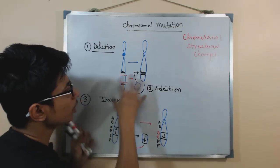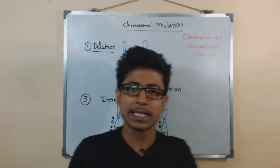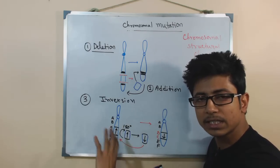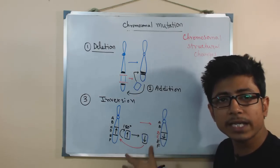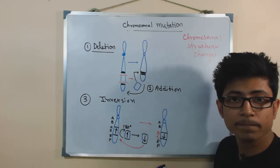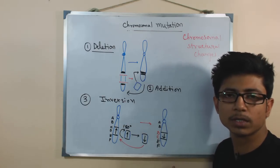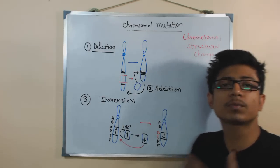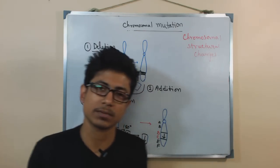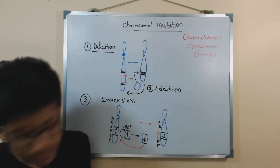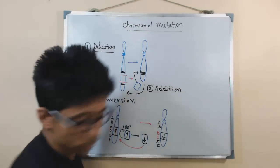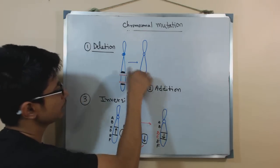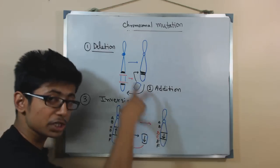Why do we discuss deletion, addition, and inversion? All these things create differences in the chromosome because the sequence of the gene segment is changed and altered. As a result, the functionality of the chromosome may change. During recombination there might be problems, so all these mutations can lead to the production of variation, just like any other mutations. Whatever we have seen so far occurs within the same single chromosome.